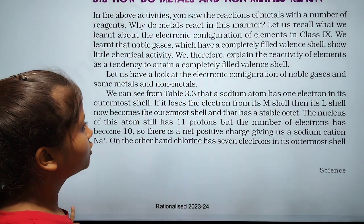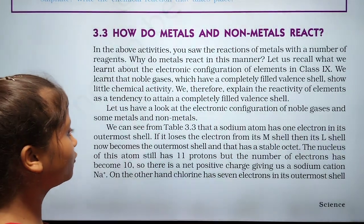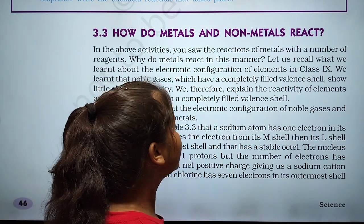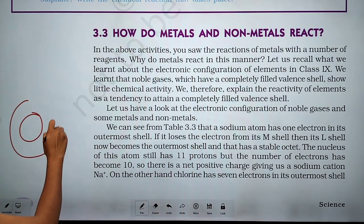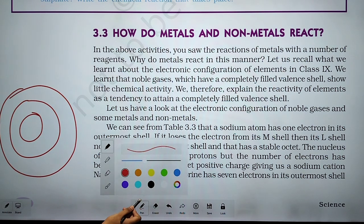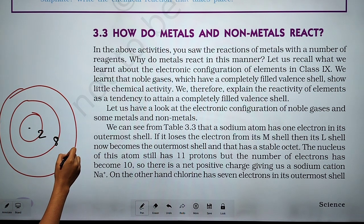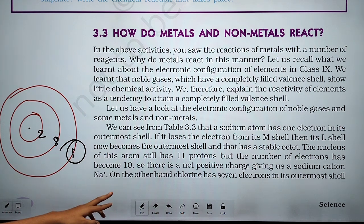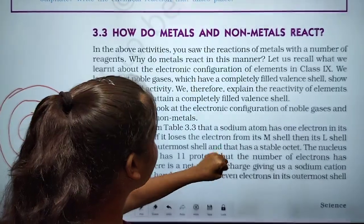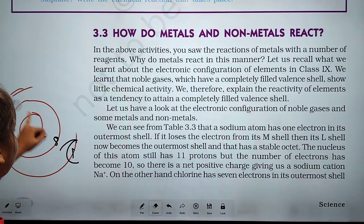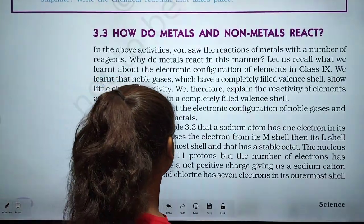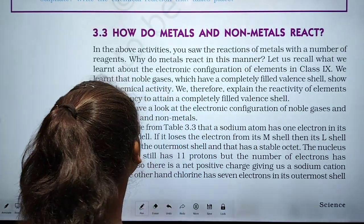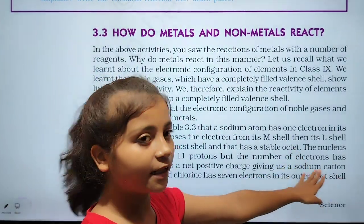Let us have a look at the electronic configuration of noble gas and the metal and non-metal. We can see table 3.3. The sodium atom has one electron in its outermost shell — 2, 8, and 1, so K, L, and M. If it loses the electron from its M shell, then its L shell now becomes the outermost shell.